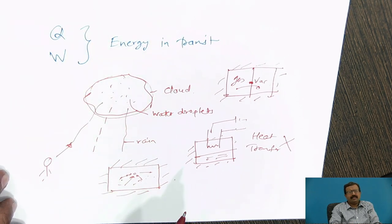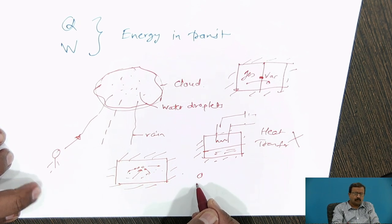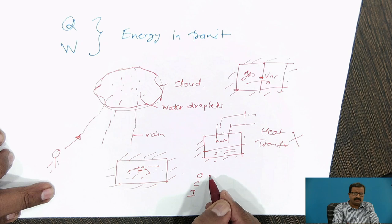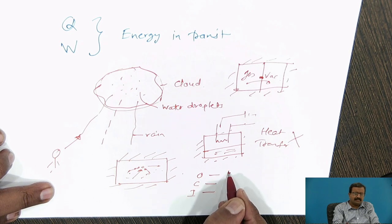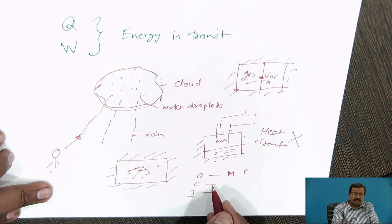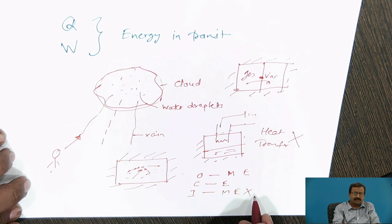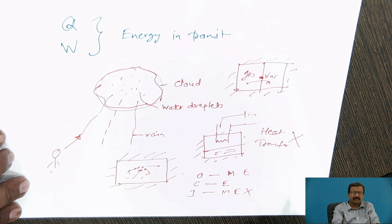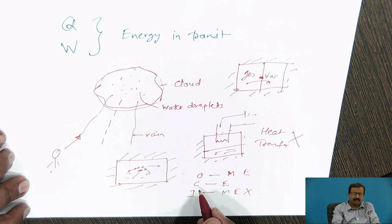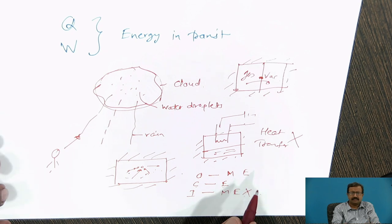We can define the systems briefly as an open system, closed system and isolated system. In open system, mass and energy both are allowed to transfer. In closed system, only energy is allowed. And in isolated system, mass and energy both are not allowed. Isolated system, classic example is your thermos flask. Open systems are normal open systems that we have. And closed systems are very typical systems when we allow only the energy transfer, not the mass transfer.